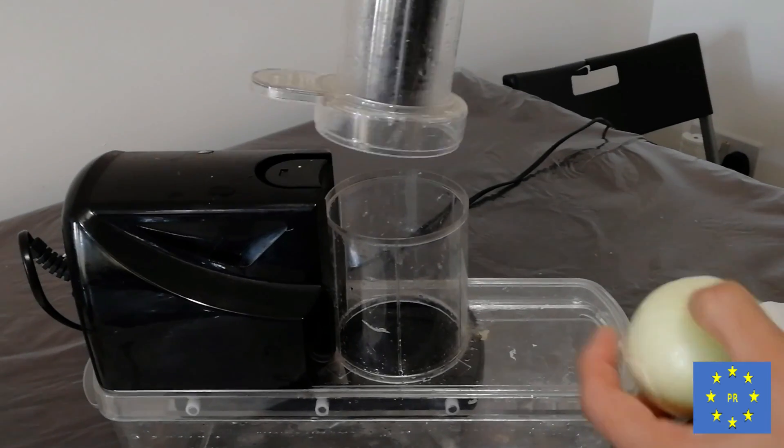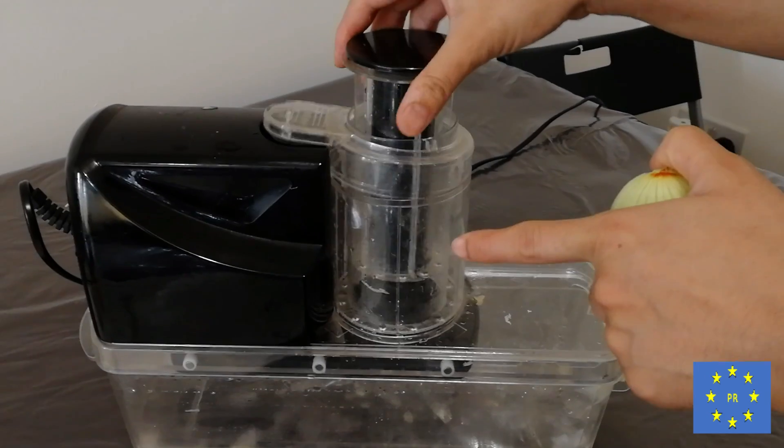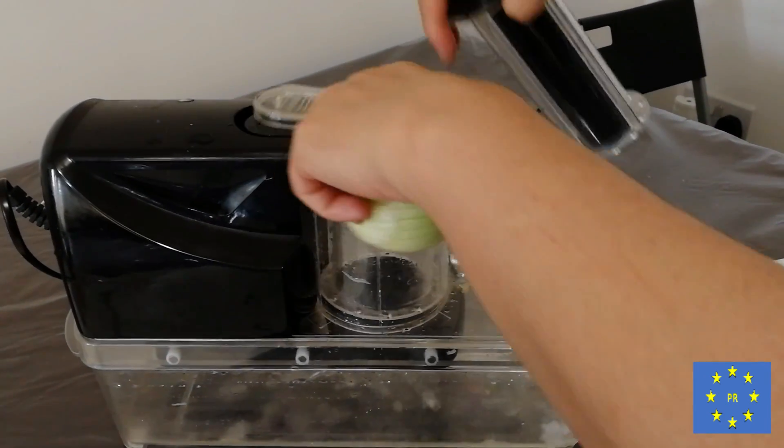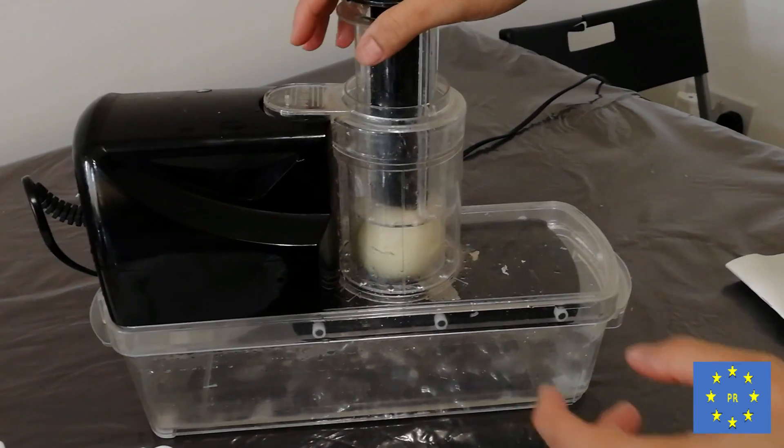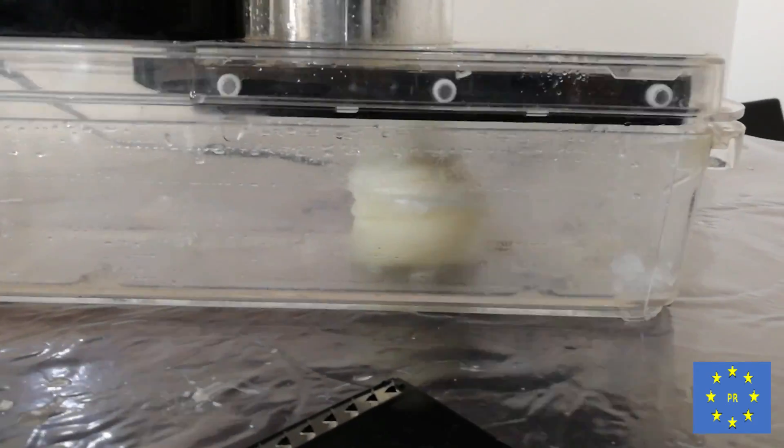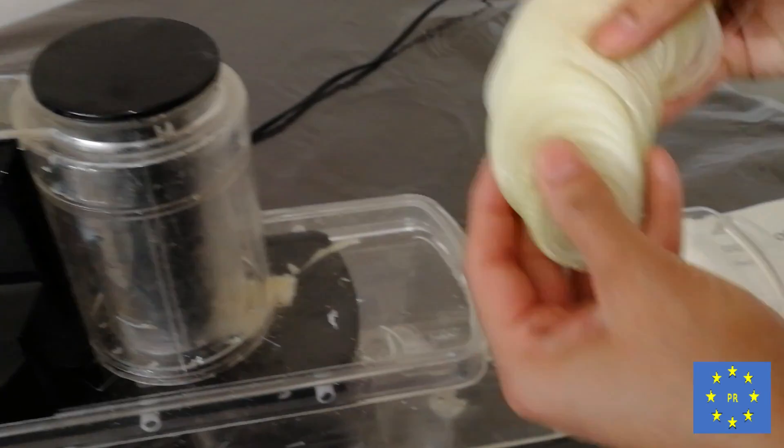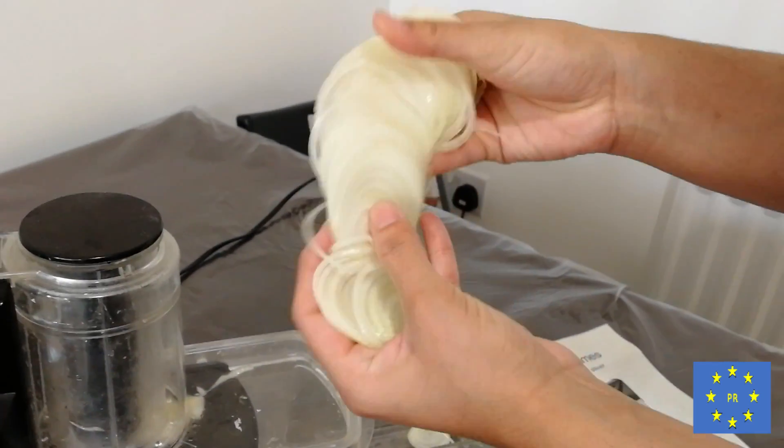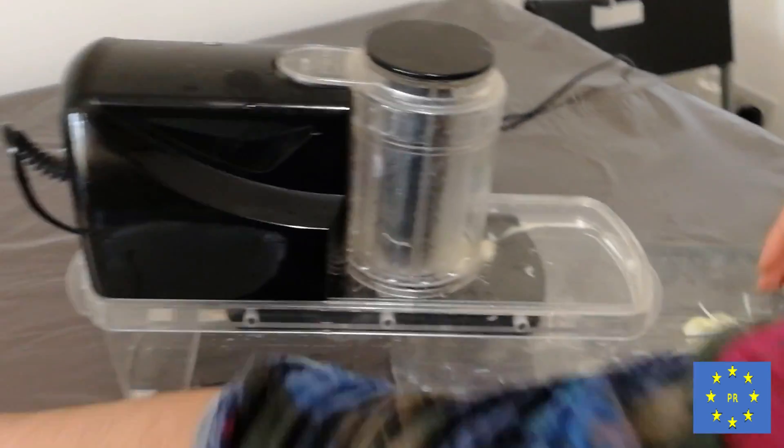So again, if you have something bigger in size, you can still use this option. But for example, hopefully my onions will fit in here. So yeah. So as you can see, they're very thin, the perfect size for my curry. And they're very quick.